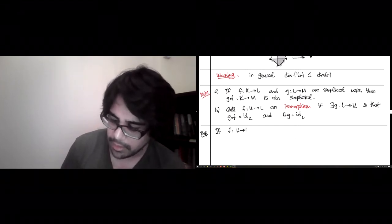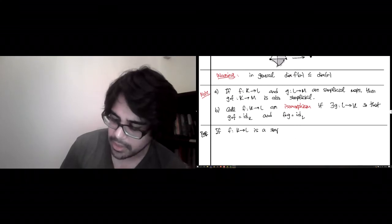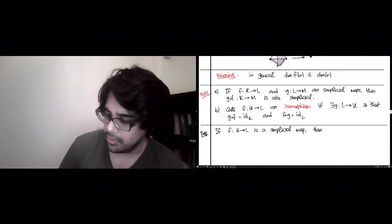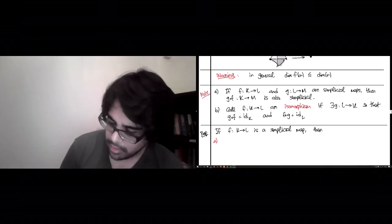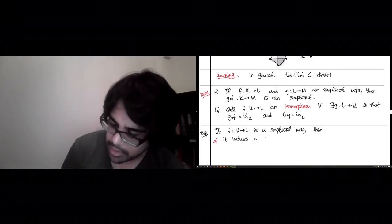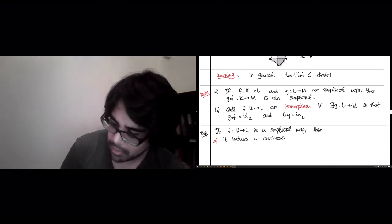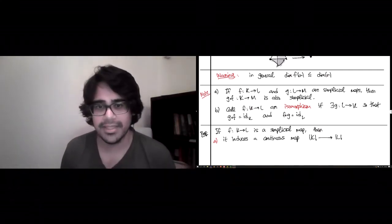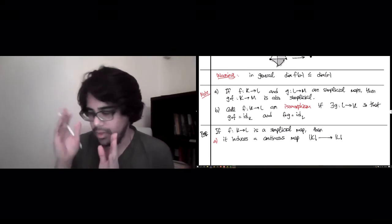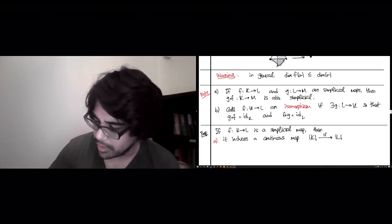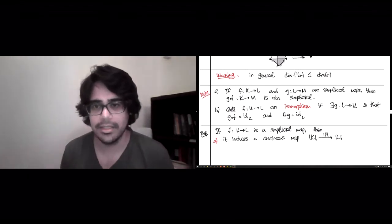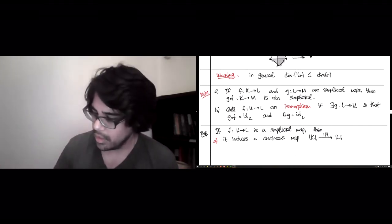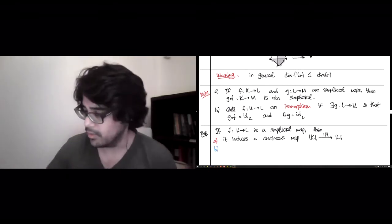If F, K to L is a simplicial map, what's the best thing you could hope for? Well, the best thing you could hope for is the following. It induces a continuous function from the geometric realization of the source to the geometric realization of the target. And since we've been indicating this geometric stuff with these vertical bars like an absolute value, let's just call it that's the continuous map on these topological spaces, realization of K and realization of L. So that's the best thing you could hope for. It's true. This is correct. This happens.